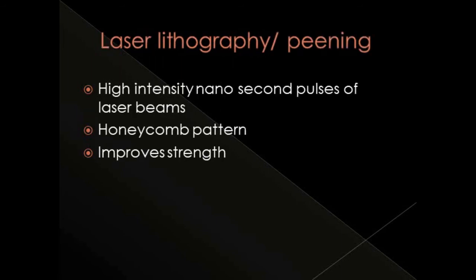Laser lithography or laser peening uses high-intensity nanosecond pulses of laser beams to create surface irregularities. A characteristic feature is that the scanning electron microscopic image of laser-peened titanium surface shows a honeycomb pattern with small pores. Another advantage is that this technique introduces compressive stresses onto the implant structure, which improves the strength of the implant.